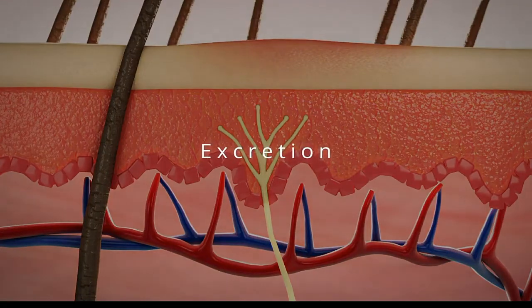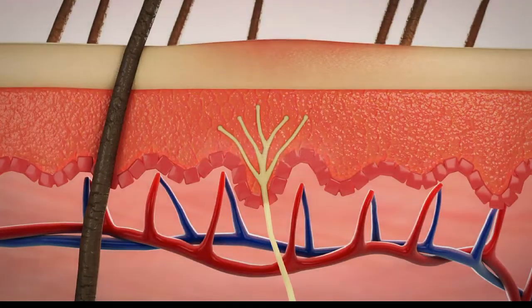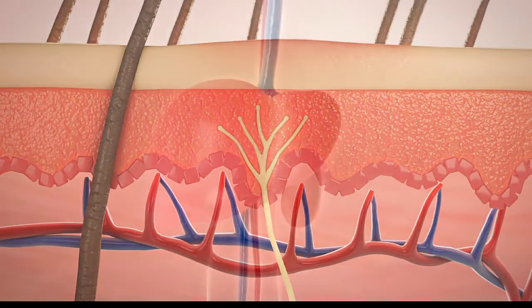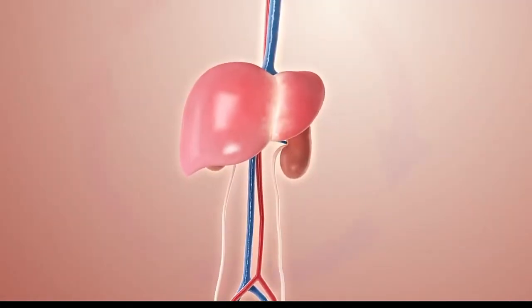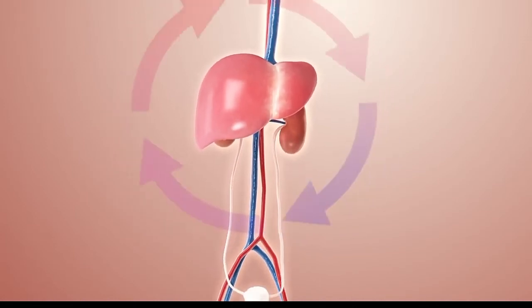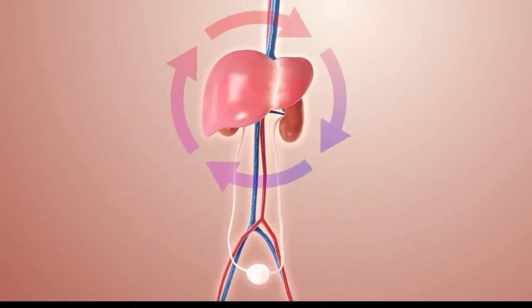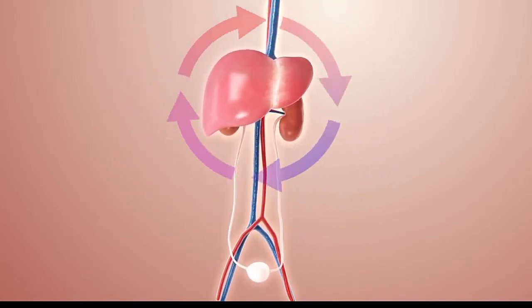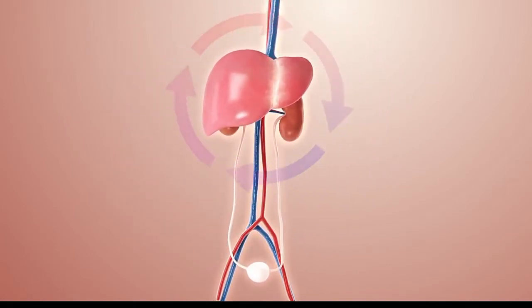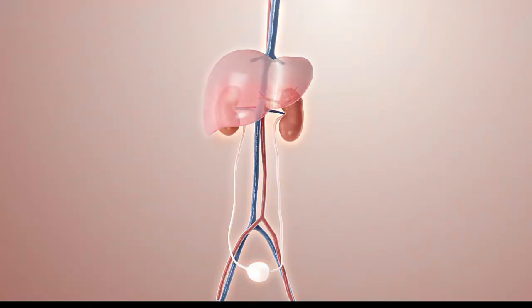Excretion. Any remaining aspirin in the blood will go round and round the blood supply, going back through the liver several times until it is all used up or filtered out of the body. It travels into the kidneys and then into the bladder for excretion.